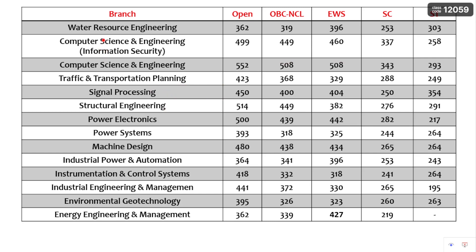These are all the cutoffs of NIT Calicut. You can see the various branches here — Water Resource Engineering, Computer Science and Engineering regarding Information Security, and also Computer Science and Engineering, which is the top branch. Here you can see the cutoffs: Open 552, OBC non-creamy layer 508, EWS 508, SC 343, ST 293.